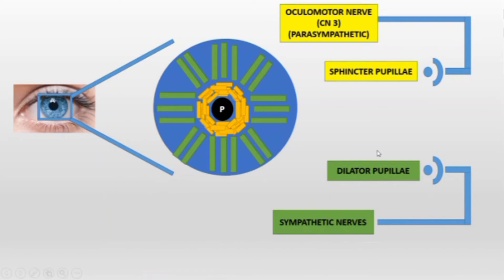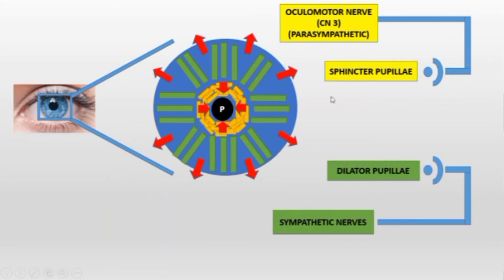The sphincter pupillae constantly tries to make the pupil small — that is miosis — while the dilator pupillae constantly tries to make the pupil big — that is mydriasis. Normally these two actions cancel each other out, so the pupil stays in its normal position. But when there is a need or any pathology, one can overcome the other, causing the pupil to become small or dilated.